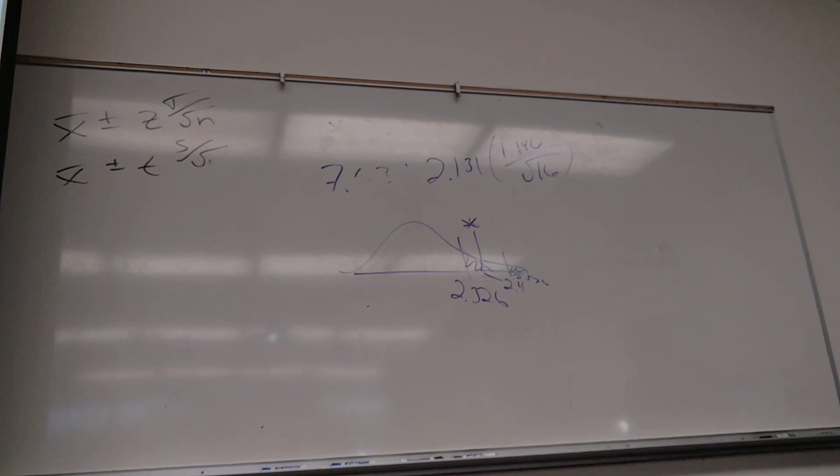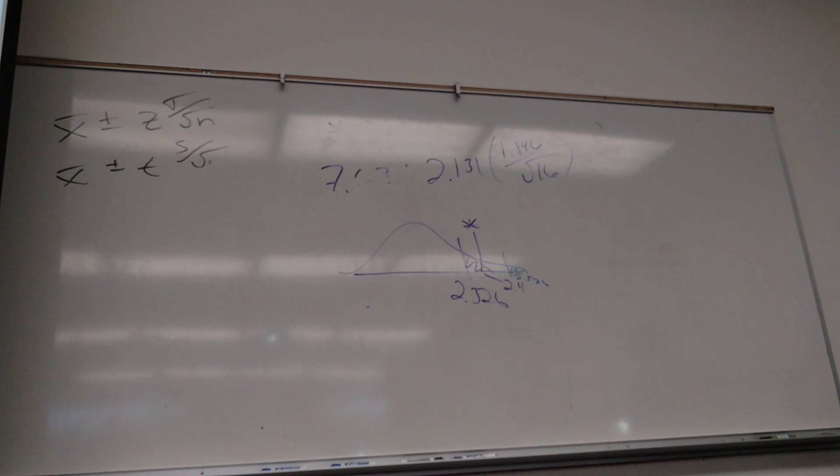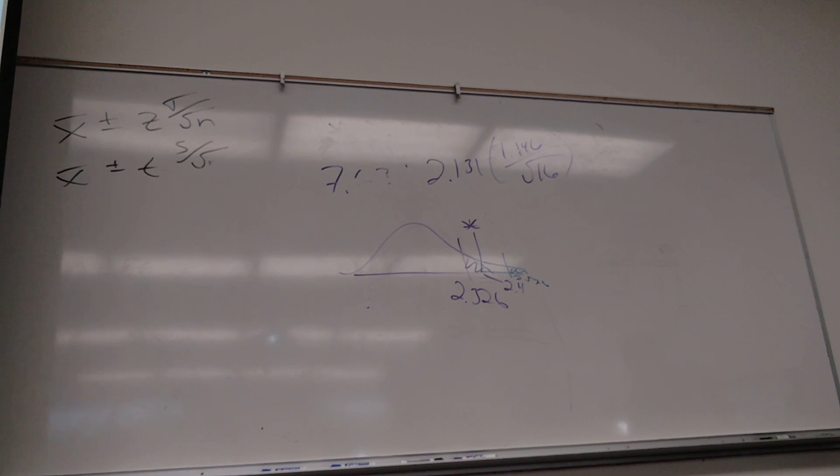And then Q bar is going to be the rest. Minus 97. Did I do that? Yeah. Oh, yeah. I did. Okay, good. So it's roughly 38. That's greater than 5.